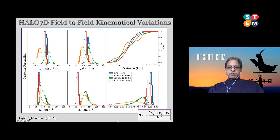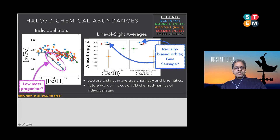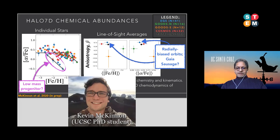Moving to the seventh dimension — chemical abundances — this is the work of Kevin McKinnon. He's measuring the ratio of alpha elements to iron (alpha/Fe on the y-axis) as a function of iron abundance, for individual stars. On the right are the line-of-sight averages for our four fields and the overall average for all four fields. Kevin's PhD thesis is in progress, and he's writing papers on the chemical abundances of stars in the Milky Way halo.